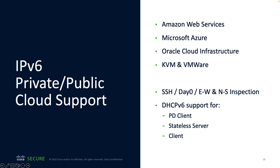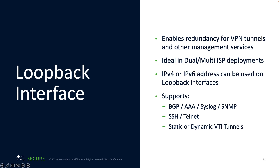We also have DHCPv6 client support where each interface on the firewall can be configured as a DHCPv6 client. Our new loopback interface support provides greater redundancy in dual or multi-ISP deployments by ensuring that the firewall remains reachable through multiple physical interfaces. Users are able to configure a loopback interface with IPv4 or IPv6 addresses. Some of the features that support the loopback interface are border gateway protocol, simple network management protocol, telnet, and virtual tunnel interfaces.